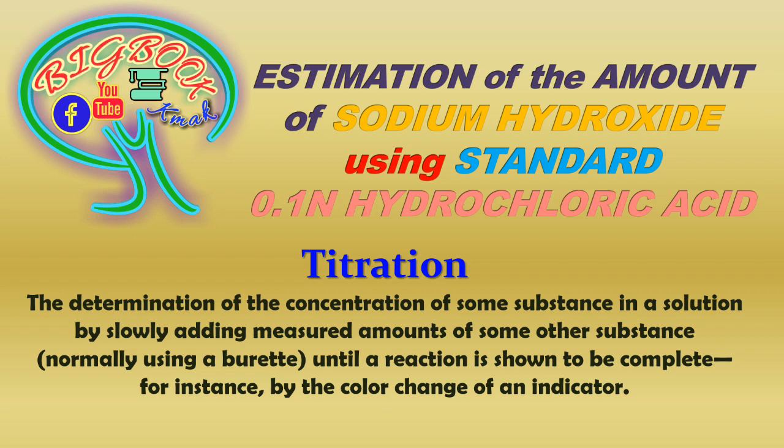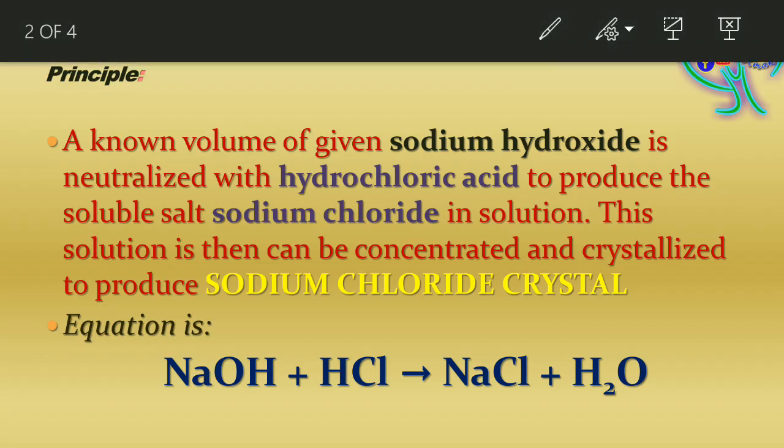Out of these two reactants, one will have a measured amount and a measured volume. The other substance will also have a measured volume, but the amount of the substance present within that volume is unknown — that has to be estimated. The main component which is going to show the result is the indicator, where the indicator is going to change its color from one form to another.